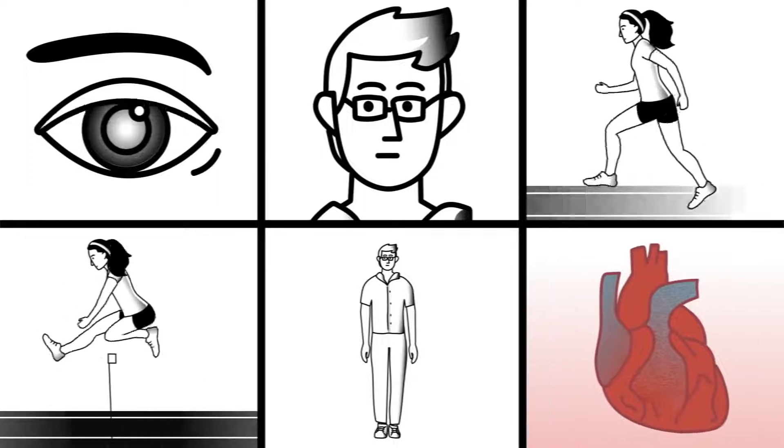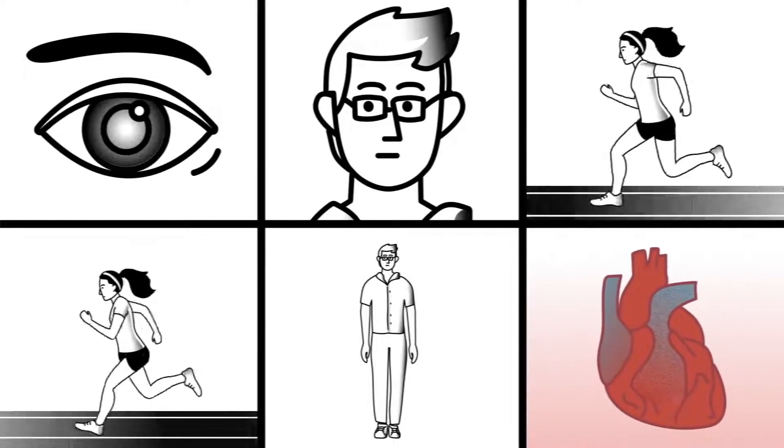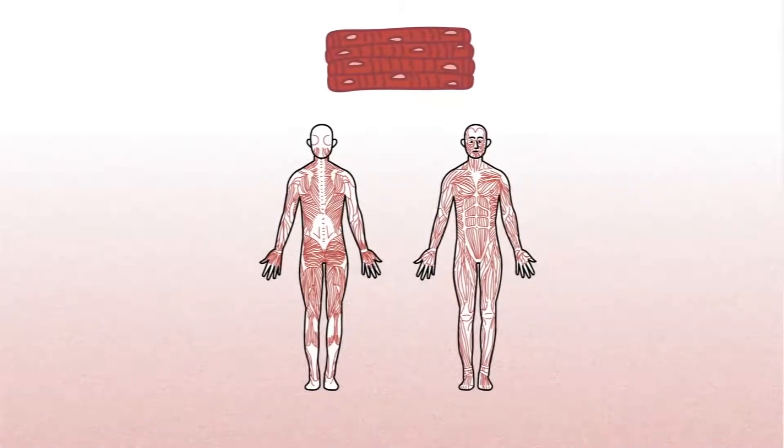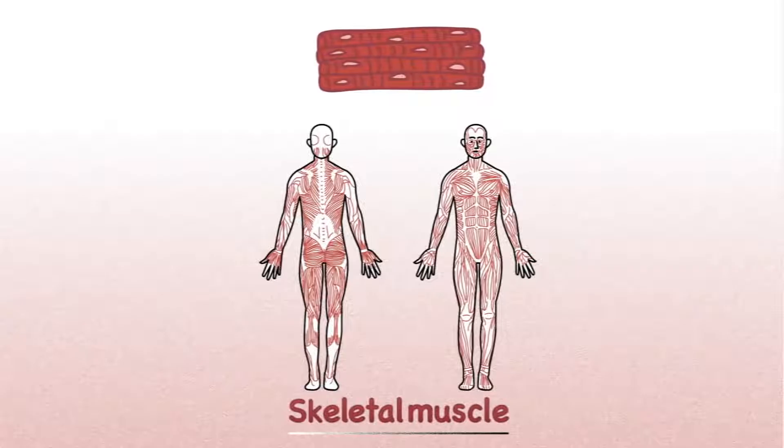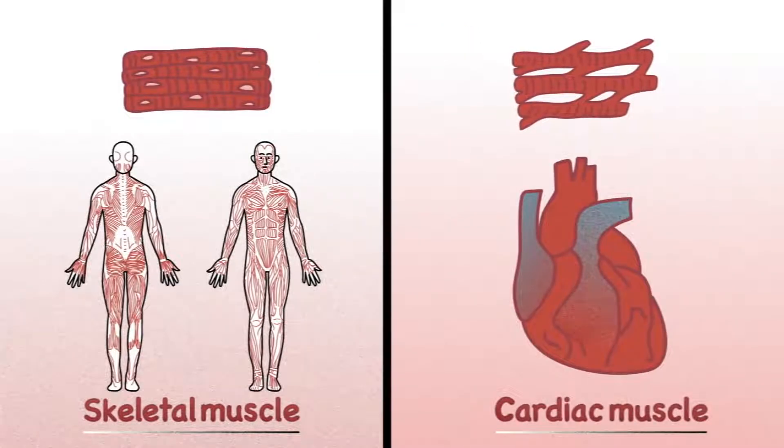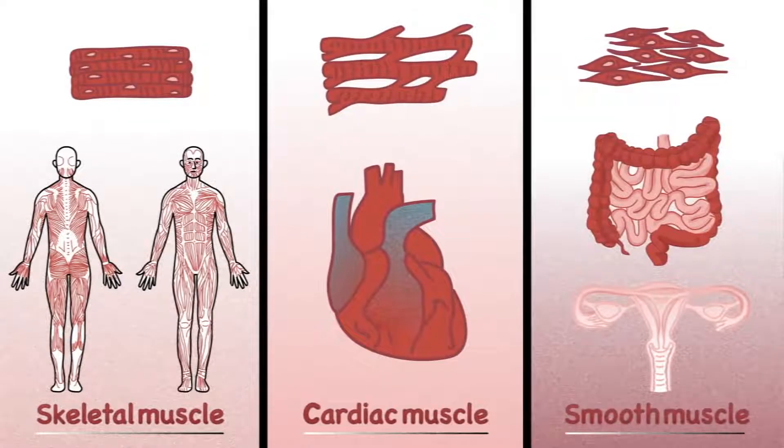It's even responsible for the heart's dependable thump. First, what exactly is the muscular system? It's made up of three main muscle types: skeletal muscle, which attaches via tendons to our bones; cardiac muscle, which is only found in the heart; and smooth muscle, which lines the blood vessels and certain organs like the intestine and uterus.